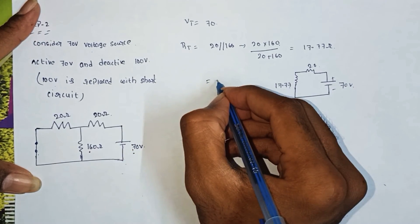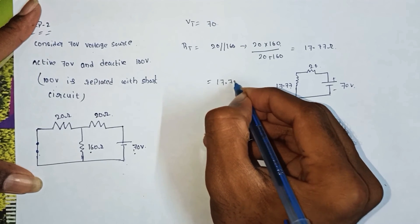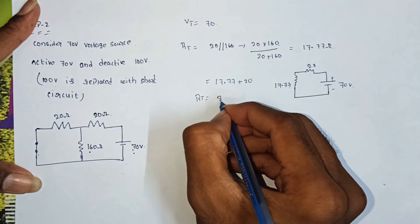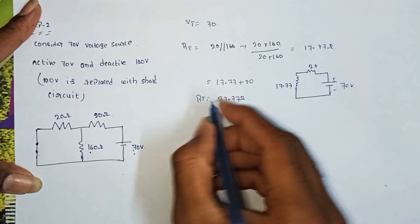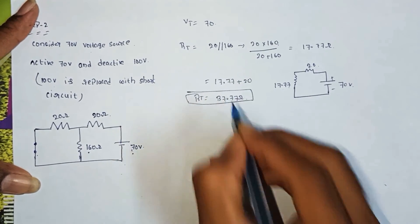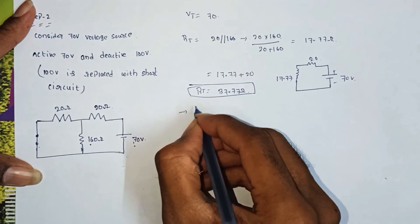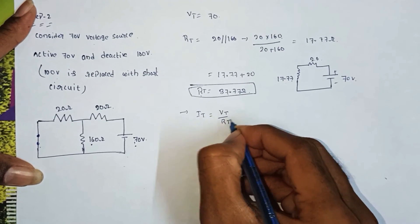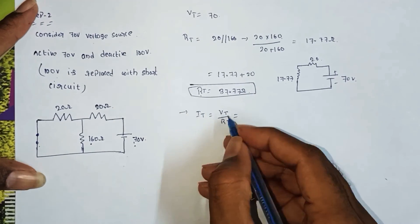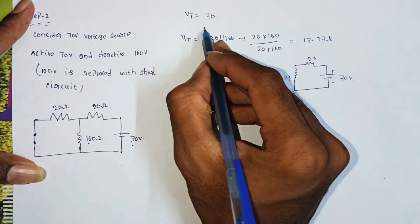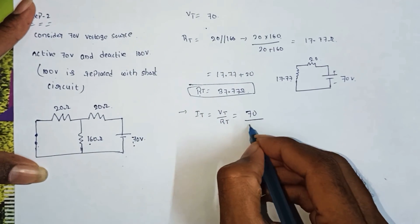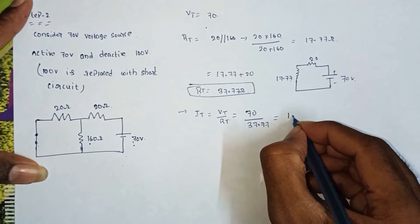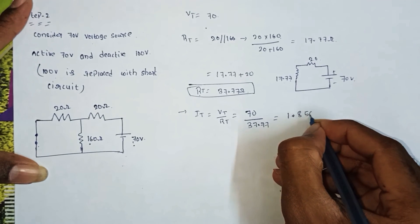R total equals 17.77 plus 20, so R total equals 37.77 ohms. From R total and V total, I total equals V by R total: 70 by 37.77 equals 1.856 amps.